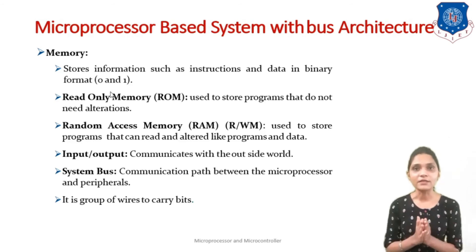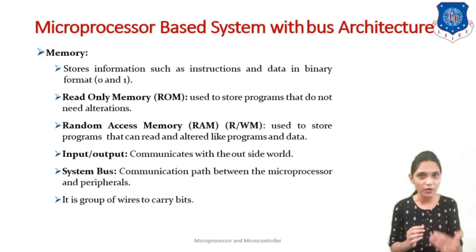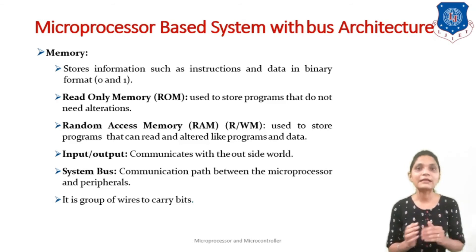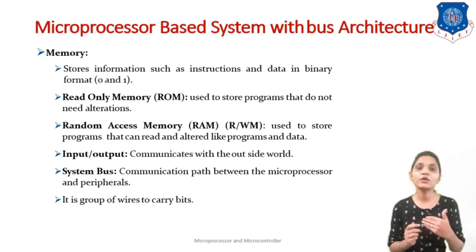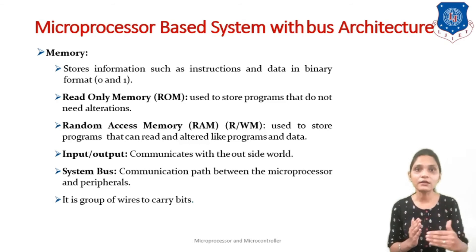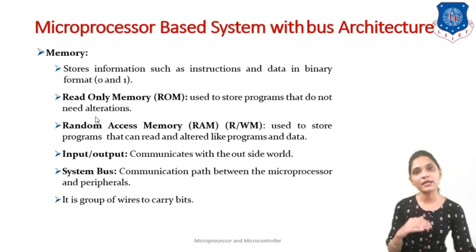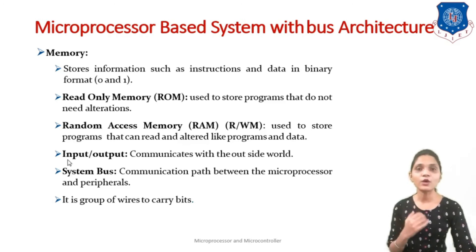Memory is the storage device where you store your data; this information is stored in the form of binary numbers — zeros and ones. It is of two types: Read Only Memory (ROM), where you can only read the data, and Random Access Memory (RAM), also known as read-and-write memory, where you can both read and write data. Whenever you need to store programs that should not be altered, store them in ROM; when data needs to change, store it in RAM.